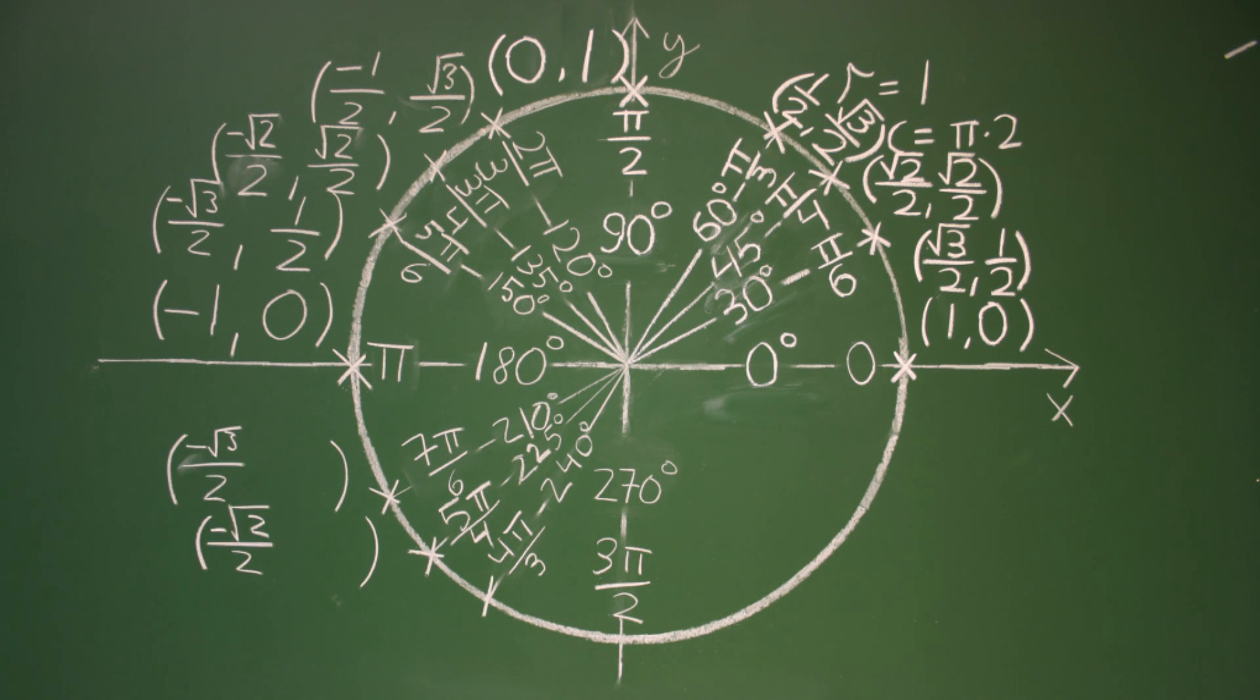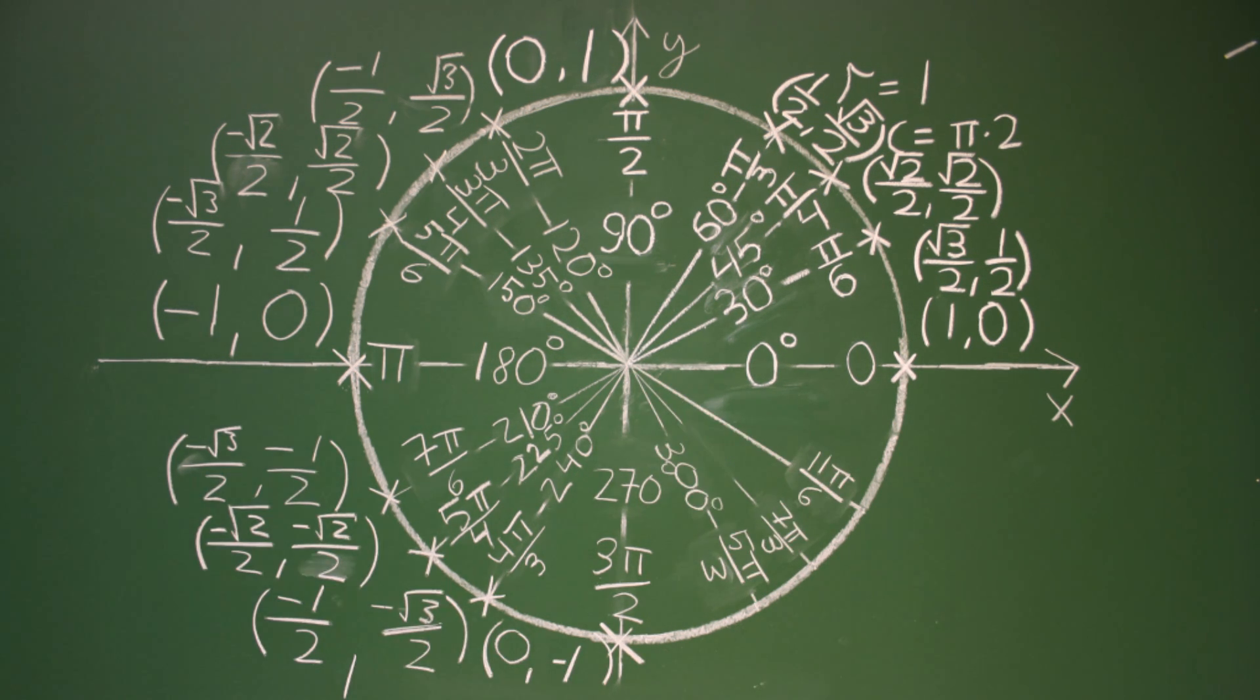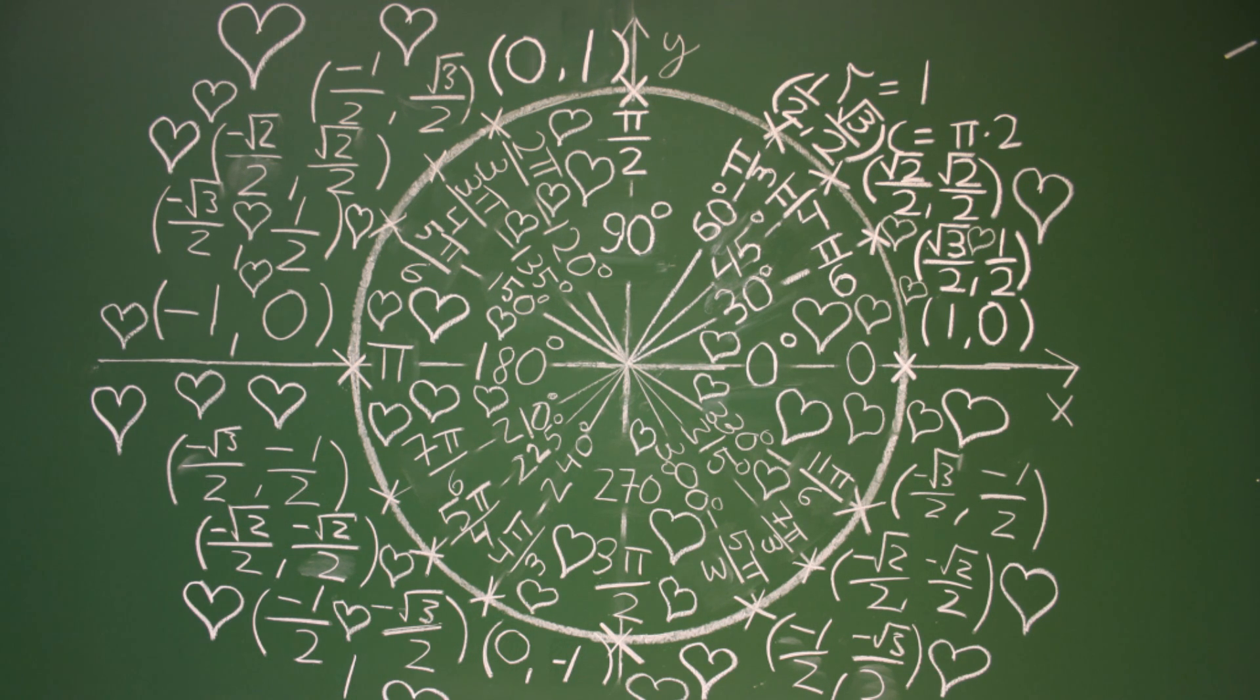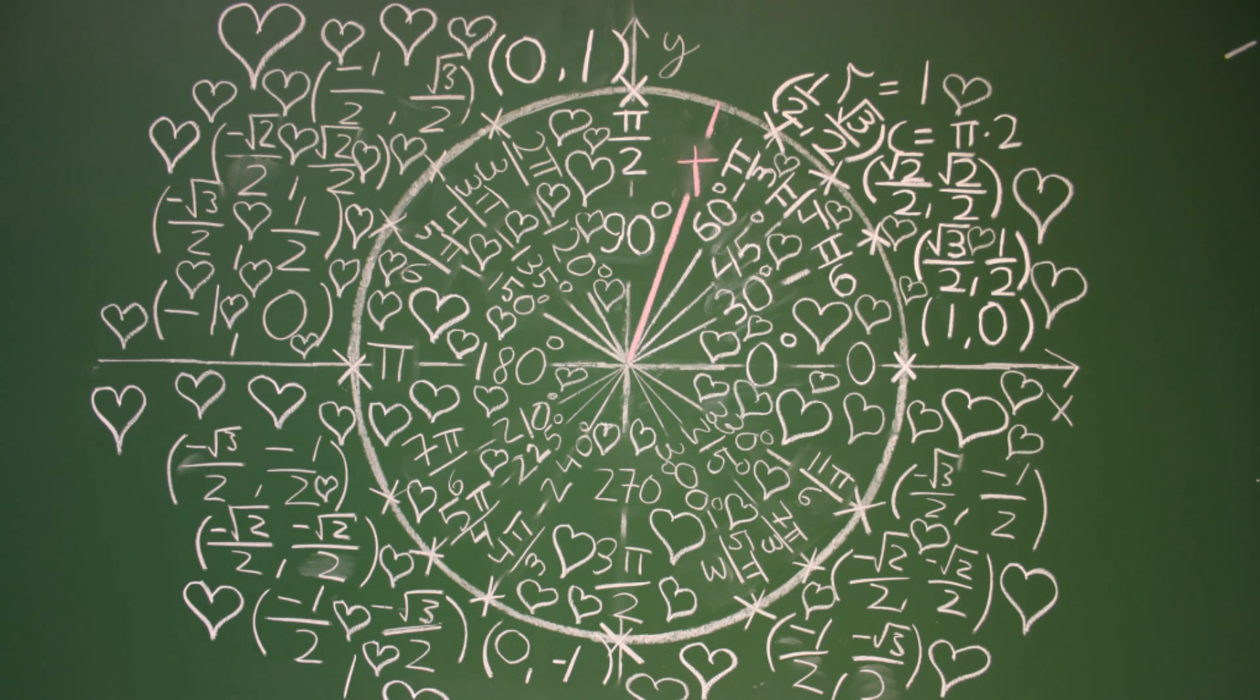R cosine is x, and R sine is y. So we all love unit circle trigonometry. R cosine is x, and R sine is y, so we all love unit circle trigonometry.